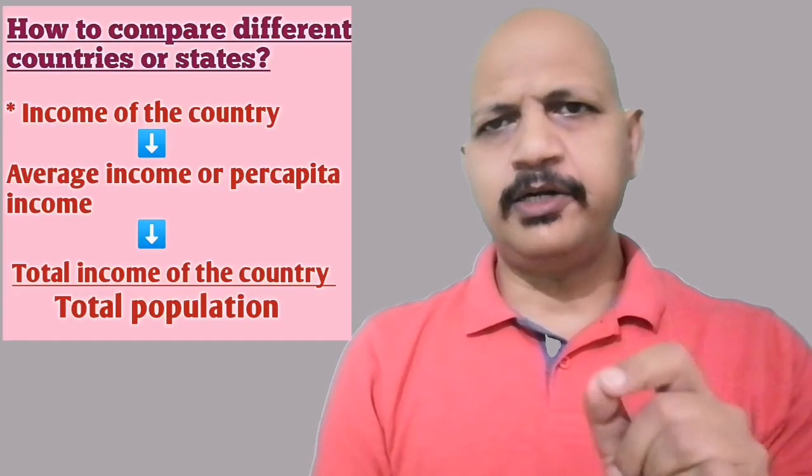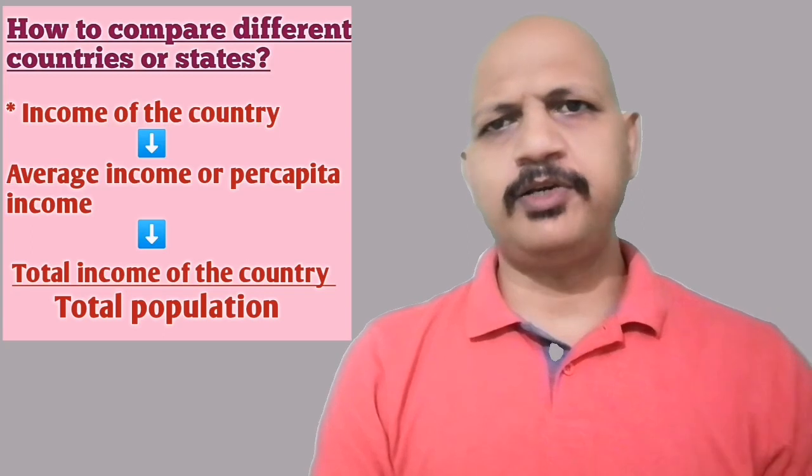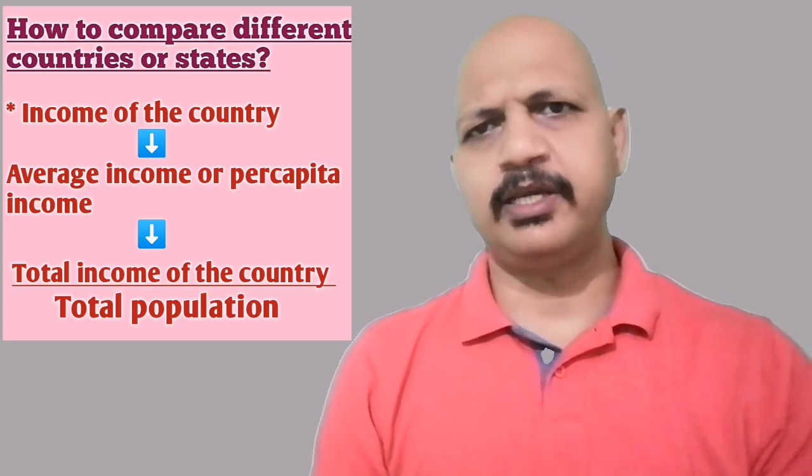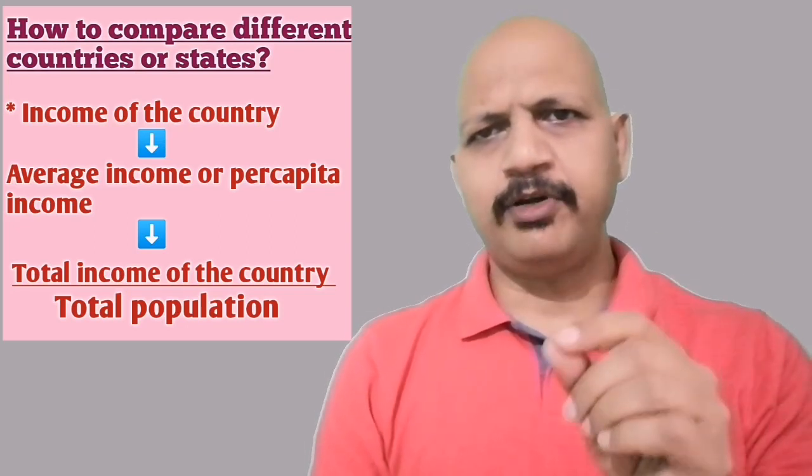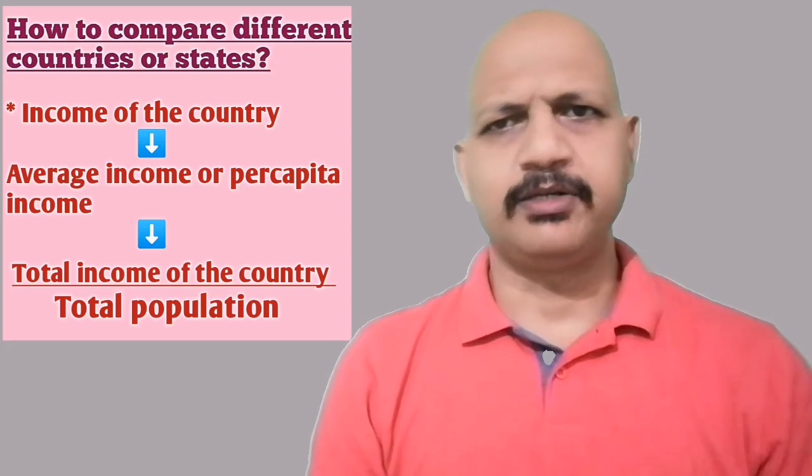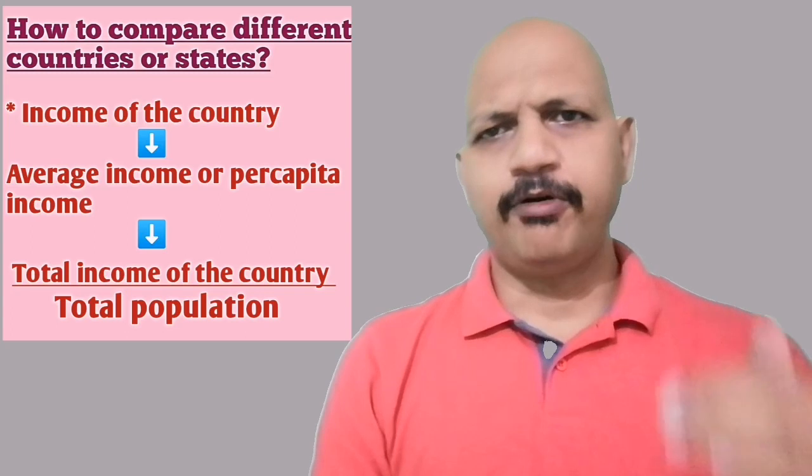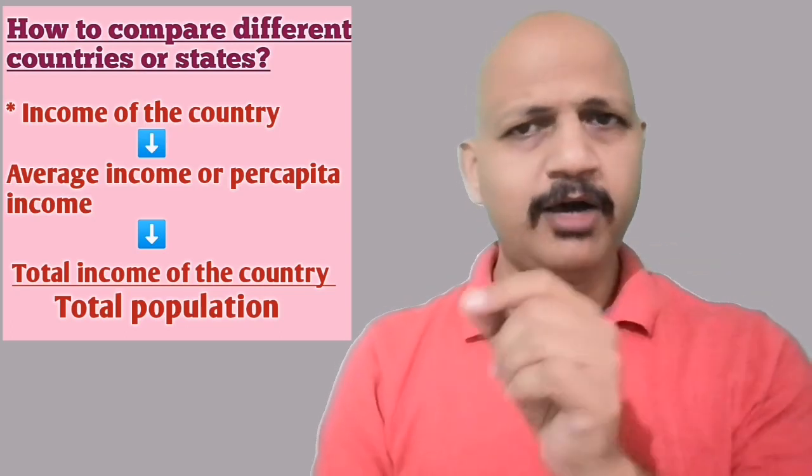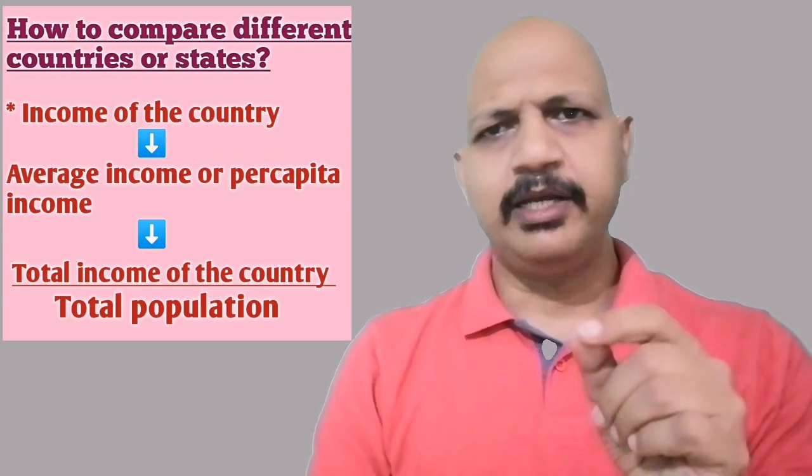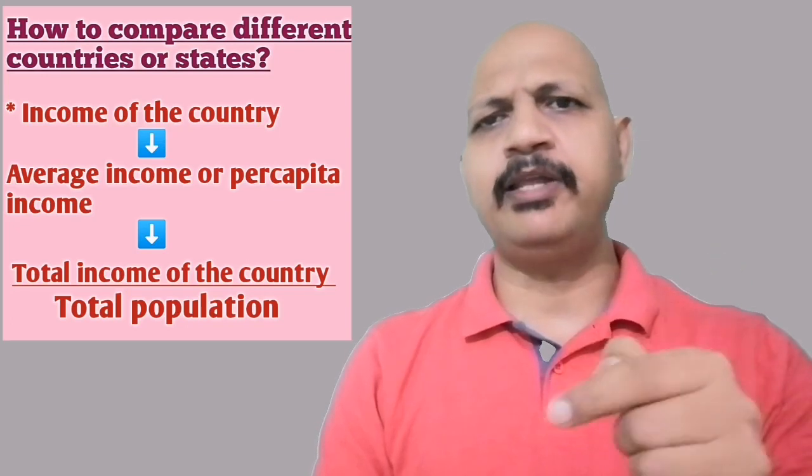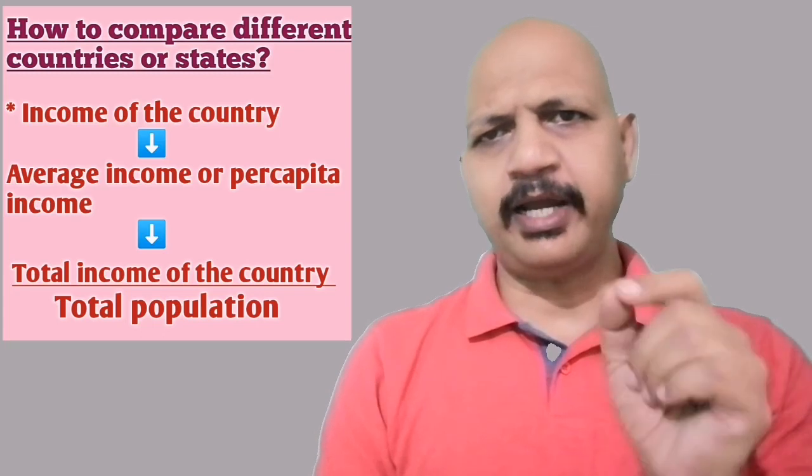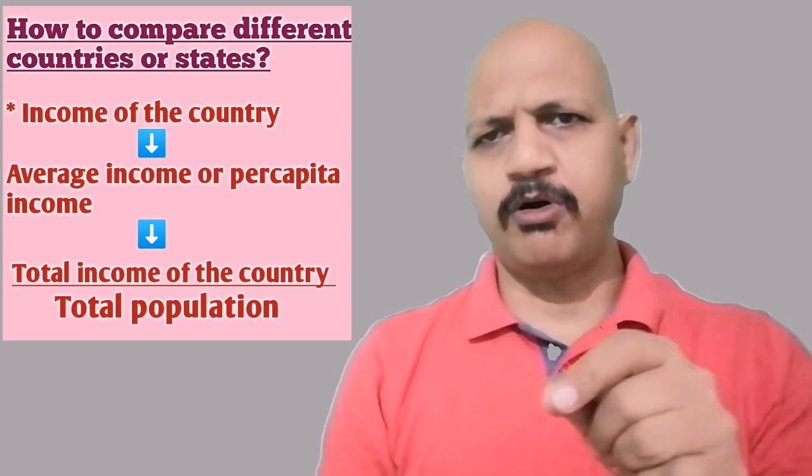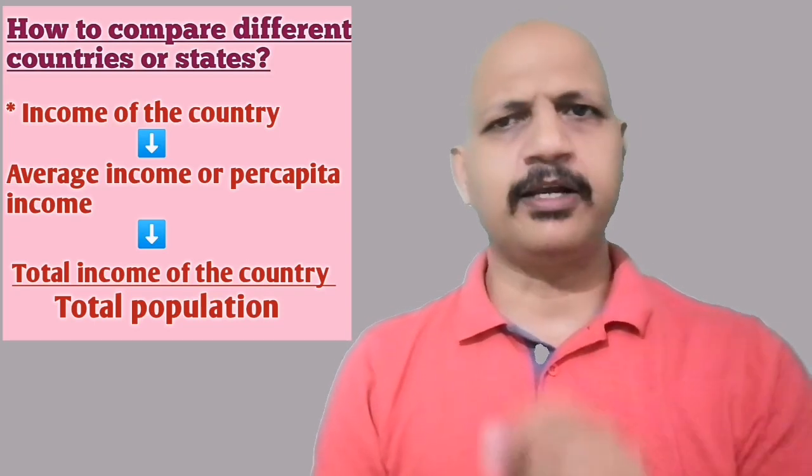Now, how do we compare countries or states? How do we find out which countries are developed and which are developing? Income is an important factor in development. Therefore, income of the country is used to determine the level of its development. When we say income of the country, we mean the total income of all the people living in that country. But if we use this total income, we may not get the correct results. Why? Because some countries are very big with big population, some are small with small population. Hence, it is not a very good idea to use total income.